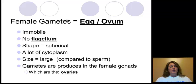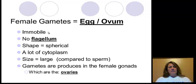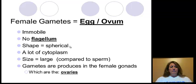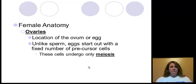The female gametes are the egg, also called the ovum. Compared to the sperm, it is not able to move on its own — there is a current that carries it from the ovary through the fallopian tube down to the uterus. It has no flagellum, is spherical in shape, and contains a lot of cytoplasm. It is relatively large because of the cytoplasm retained during meiosis. The eggs are produced in the ovaries, which are the female gonads.